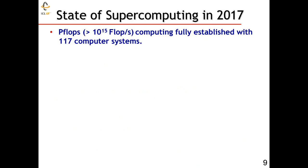If we take a look at the state of high-performance computing or supercomputing today, we have supercomputers which execute in the range of petaflops — that's 10 to the 15 floating-point operations per second. When I talk about floating-point operations, I'm referring to adds and multiplies of 64-bit operands. We have 117 computing systems today which operate at greater than one petaflop performance level.